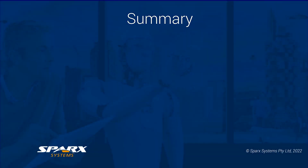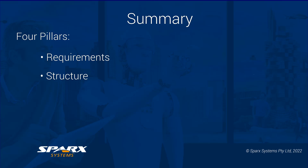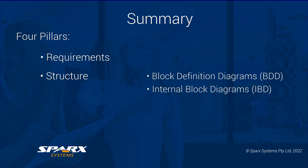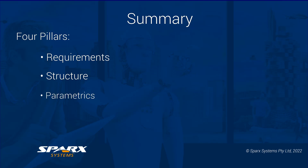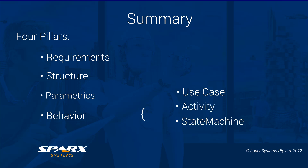Before going on to look at other aspects of the human and computer interpretation of the modelling, let's do a brief summary of the points covered in the SysML presentation. In this, we have covered in detail the four pillars of SysML including requirements, structural modelling including block definition diagrams, internal block diagrams, constraint block diagrams, and parametric diagrams. Then we looked at behavioural model diagrams including use case diagrams, activity diagrams, state machine diagrams, and interaction diagrams.